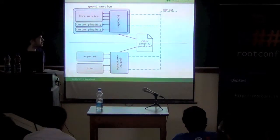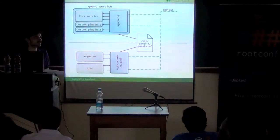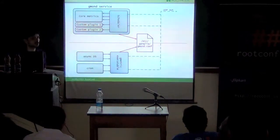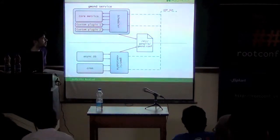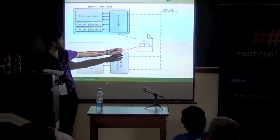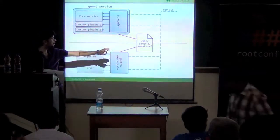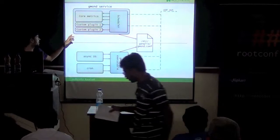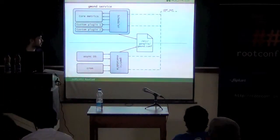It can send via UDP, TCP, both multicast and unicast. But on most cloud platforms UDP multicast doesn't work, so UDP unicast is what we use. It picks up its configuration from /etc/ganglia/gmond.conf file.